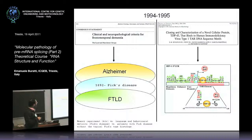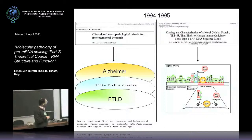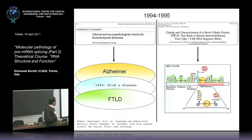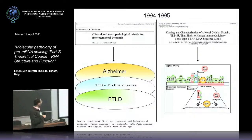This protein was first identified in 1996 when people were looking for factors that could bind the TAR-DNA element of the HIV-1 virus. They identified TDP-43 and called it TAR-DNA binding protein. Nobody thought much about studying it further because it was not a very efficient repressor of HIV-1 transcription.